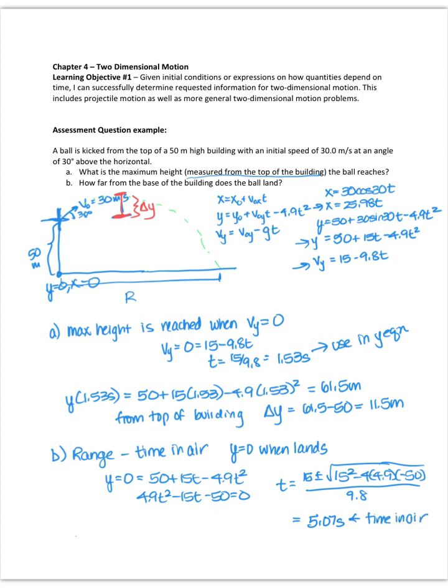Now I want to find the x for that time would be the range, and that's what I'm looking for. That's going to give me the distance from the base of the building that the ball lands at. So I'll use my x value. It's 25.98 times 5.07. And that gives me a range of 131.7 meters.